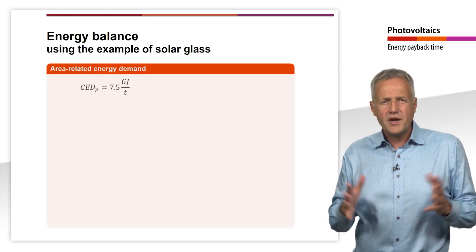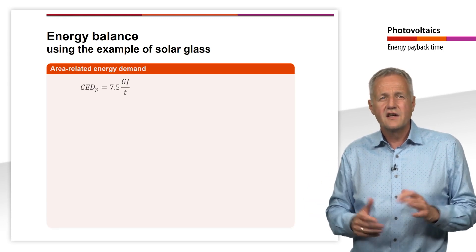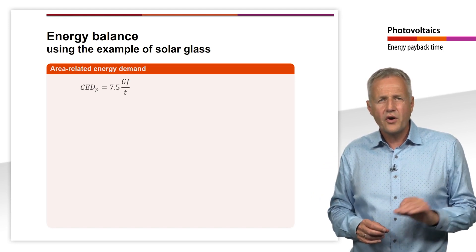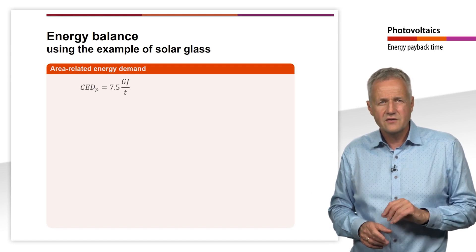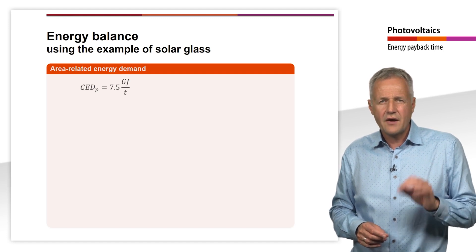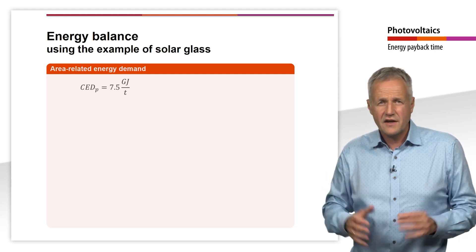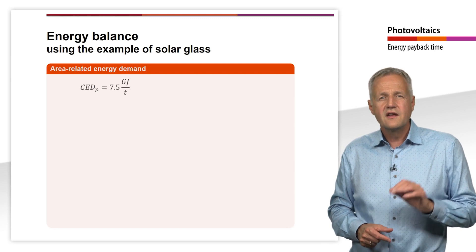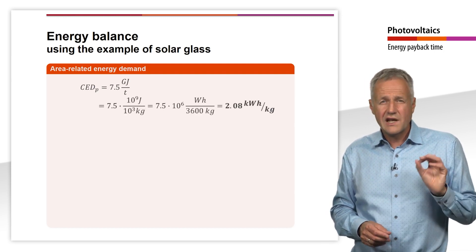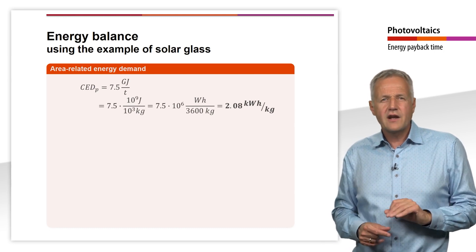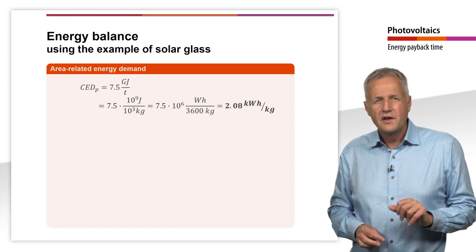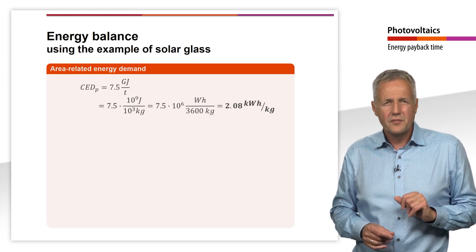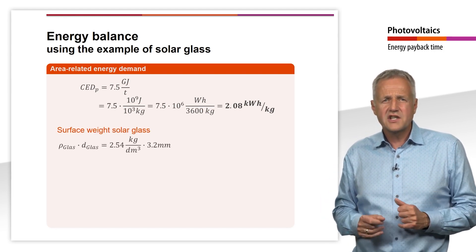In order to calculate the energy payback time of solar glass, the cumulative energy input during production and the energy yield of the PV system must be put into a ratio. For this purpose, both quantities must be related to the same reference value. In the case of a PV system, the reference value is usually area. Therefore, we have to convert the cumulative energy demand to the module area in kWh per square meter. To do this, we first convert the energy from GJ per tonne to kWh per kilogram by dividing the value by 3600 J per watt-hour. We get a cumulative energy input of 2.08 kWh per kilogram.